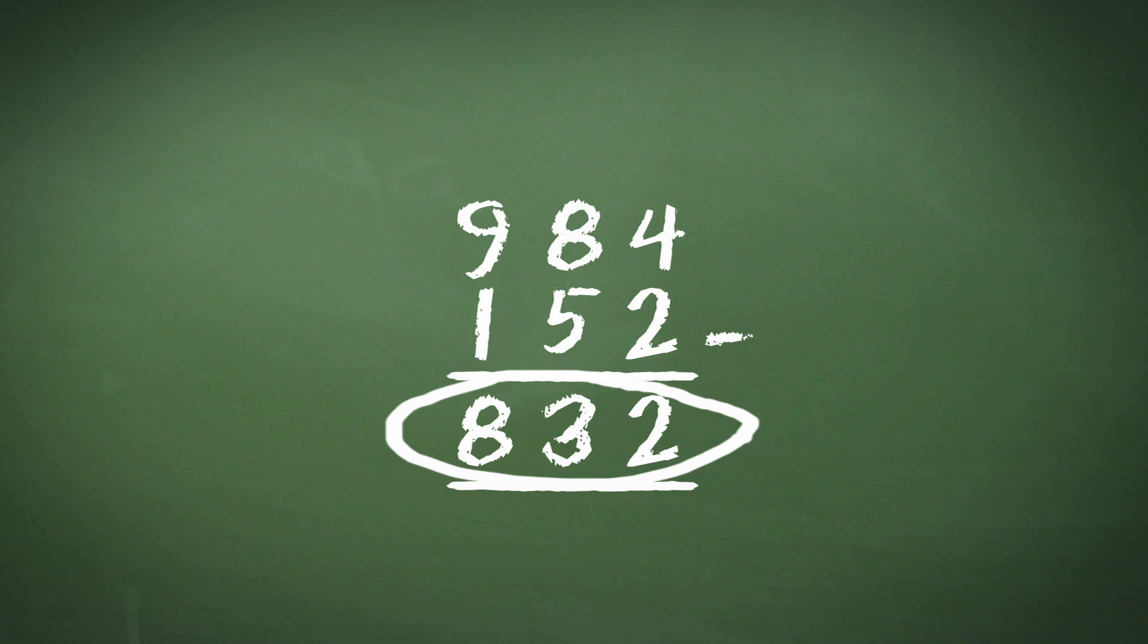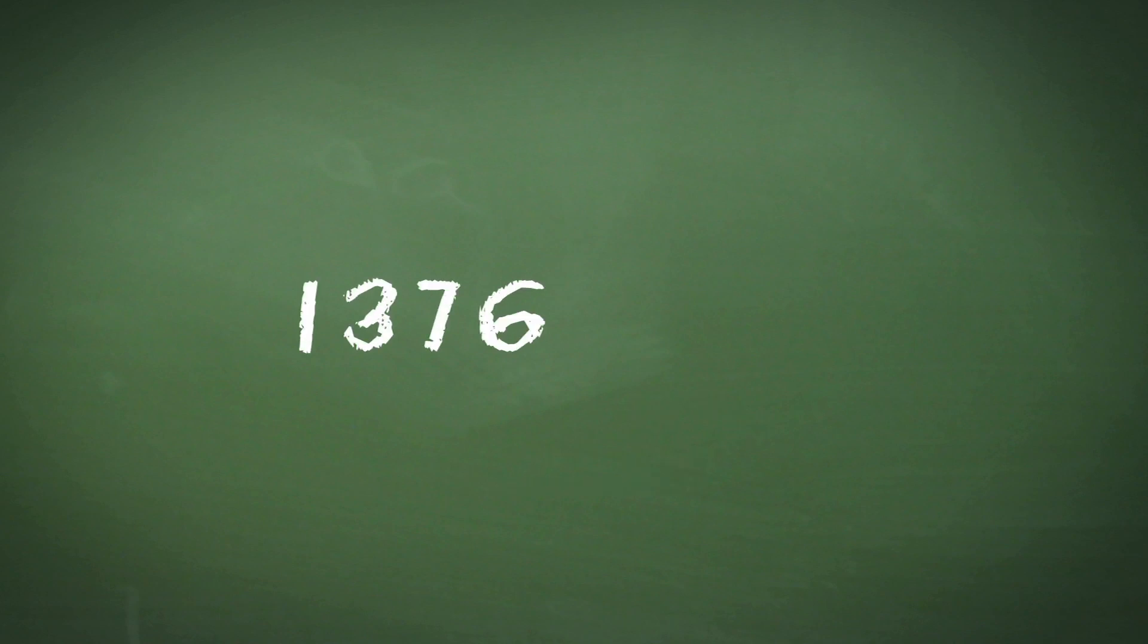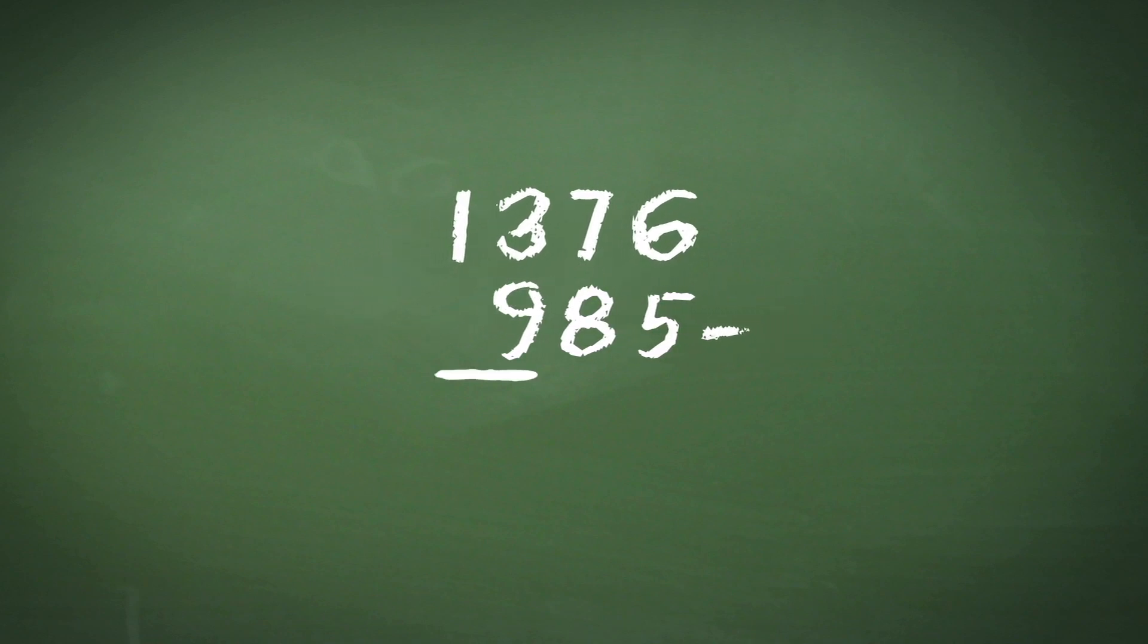Now let's look at a slightly trickier calculation. If we have 1376 minus 985, again we lay it out as per the previous example, and then we start with 6 minus 5, which gives us 1.